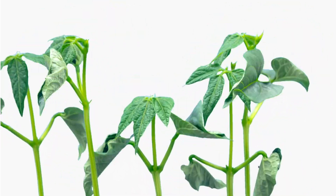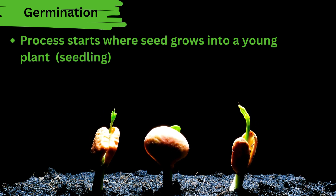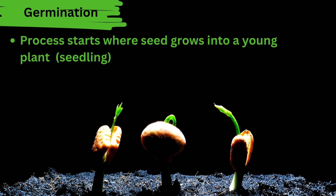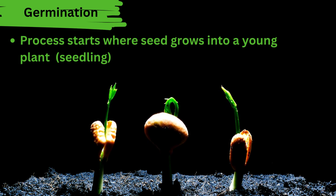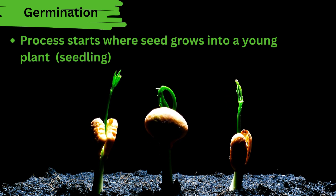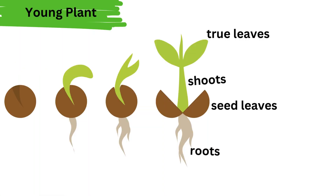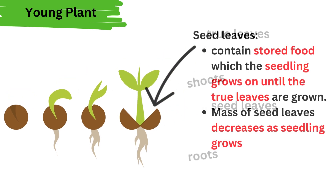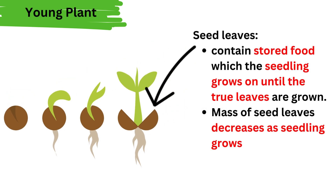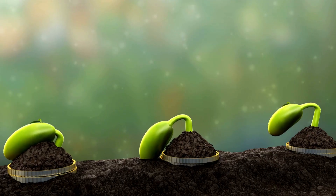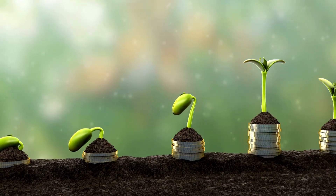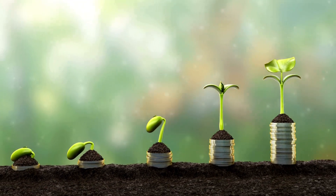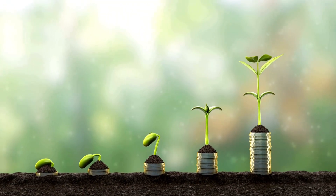Then the process of germination starts, when the seed grows into a young plant — a seedling. A young plant has shoots and roots and a seed leaf. A seed leaf is part of the plant that contains stored food for the seedling to grow.